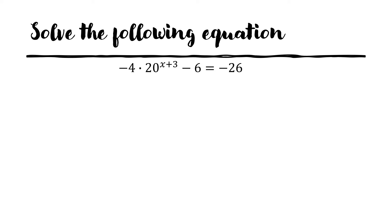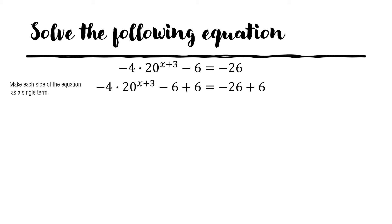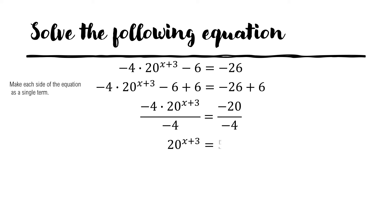Let's have another example: 4 times 20 raised to x plus 3 minus 6 equals negative 26. First, make each side of the equation a single term. We add both sides by 6: negative 26 plus 6 equals negative 20, and negative 6 plus 6 equals 0. What remains is 4 times 20 raised to x plus 3. We divide both sides by 4, giving us 20 raised to x plus 3 equals 5.